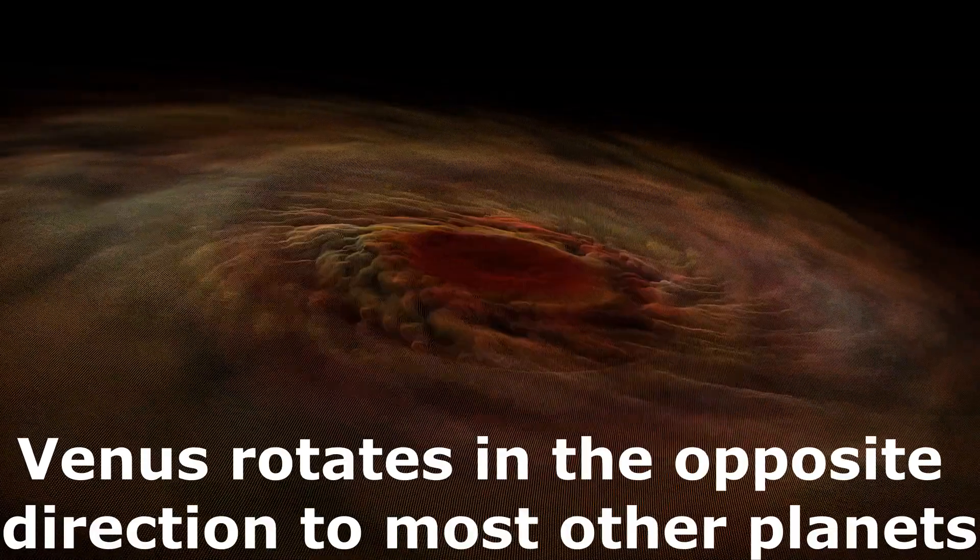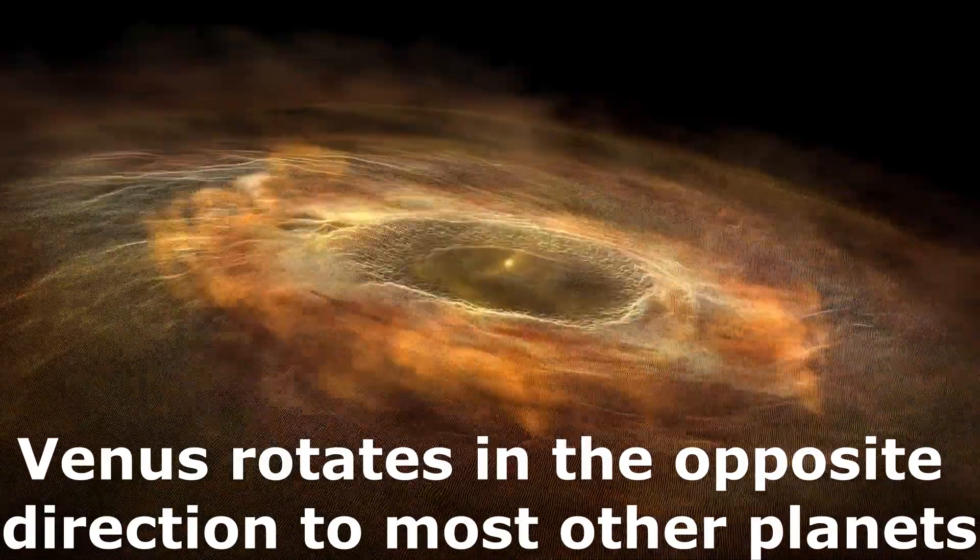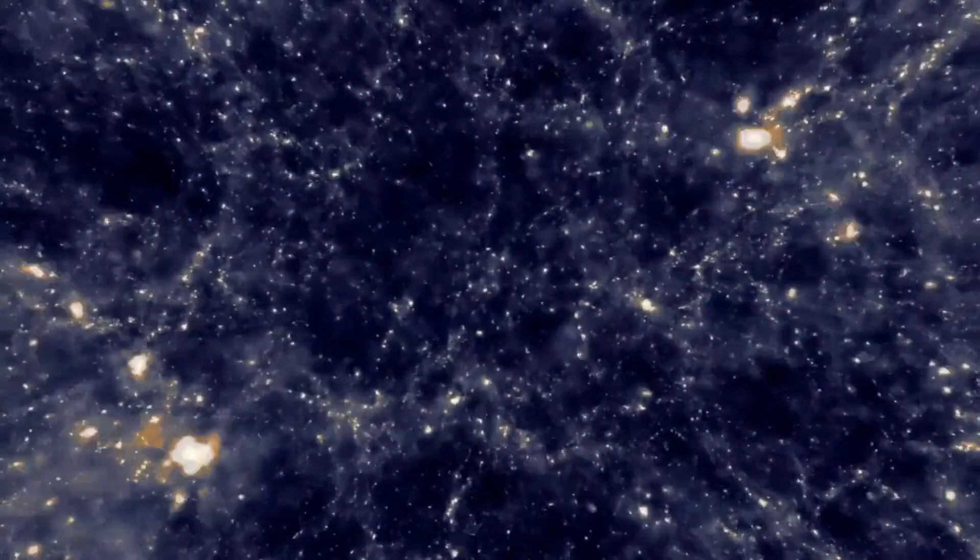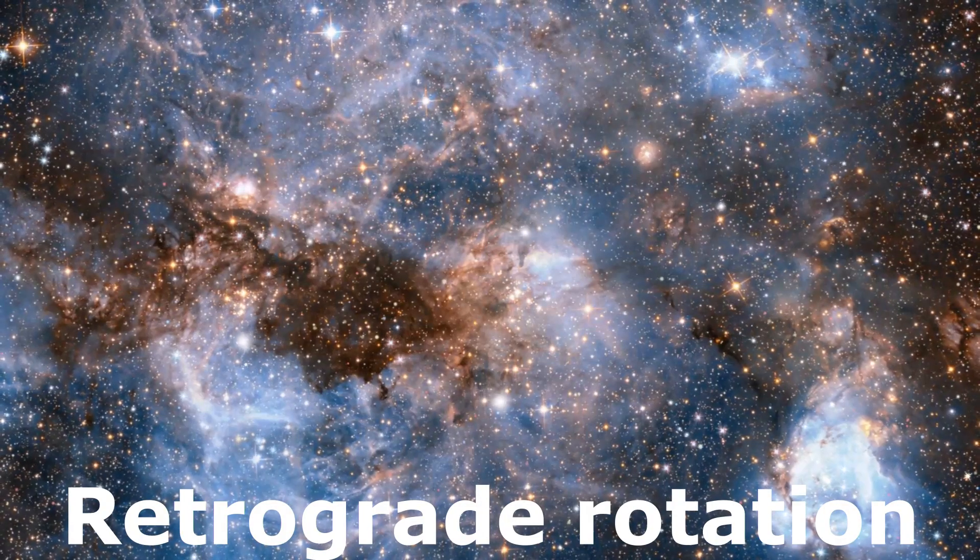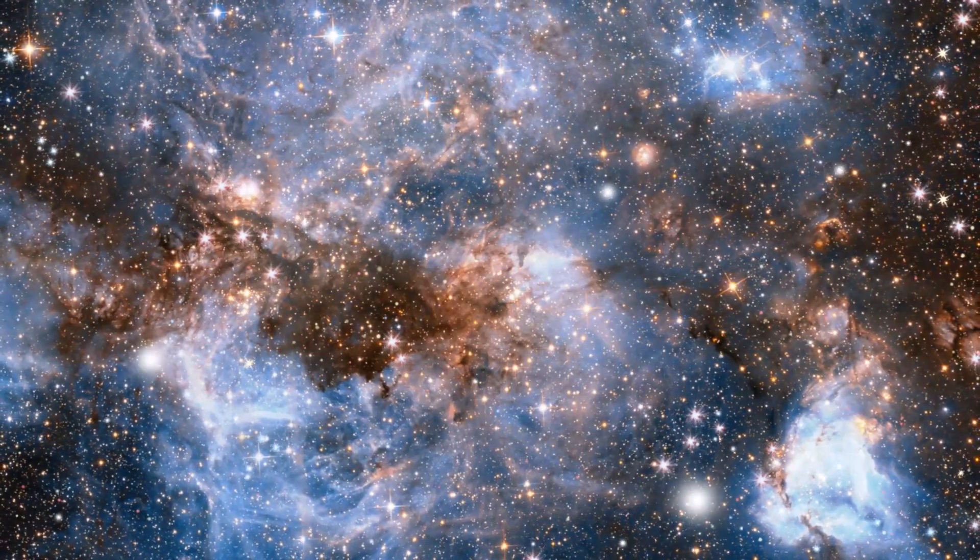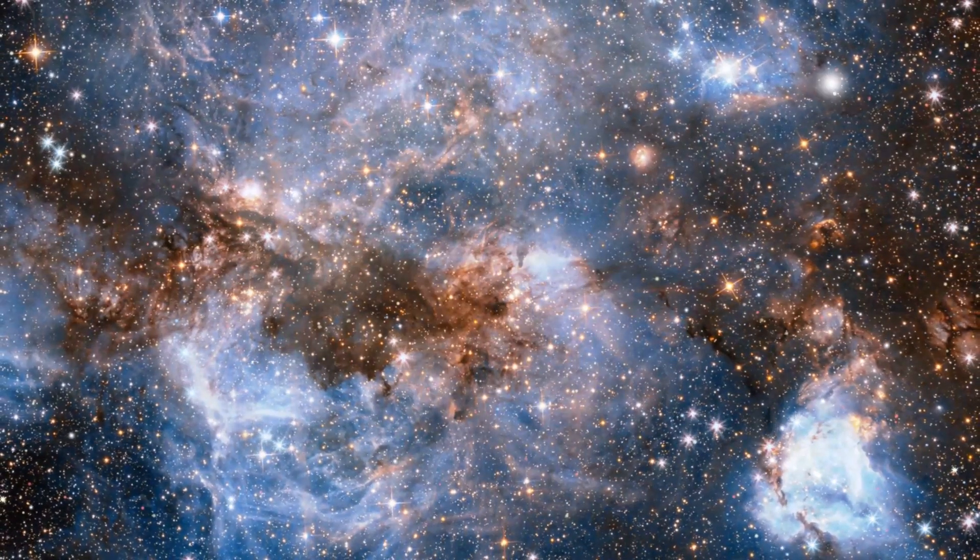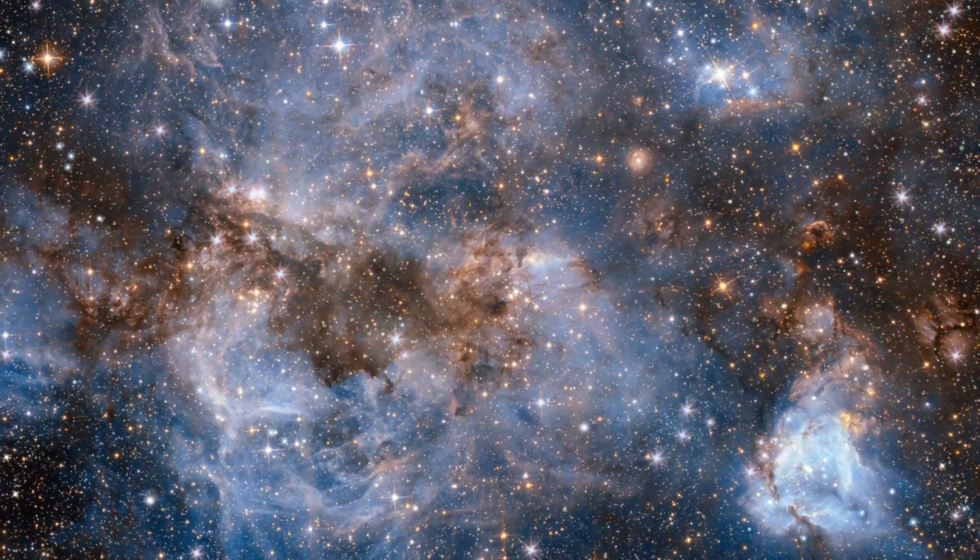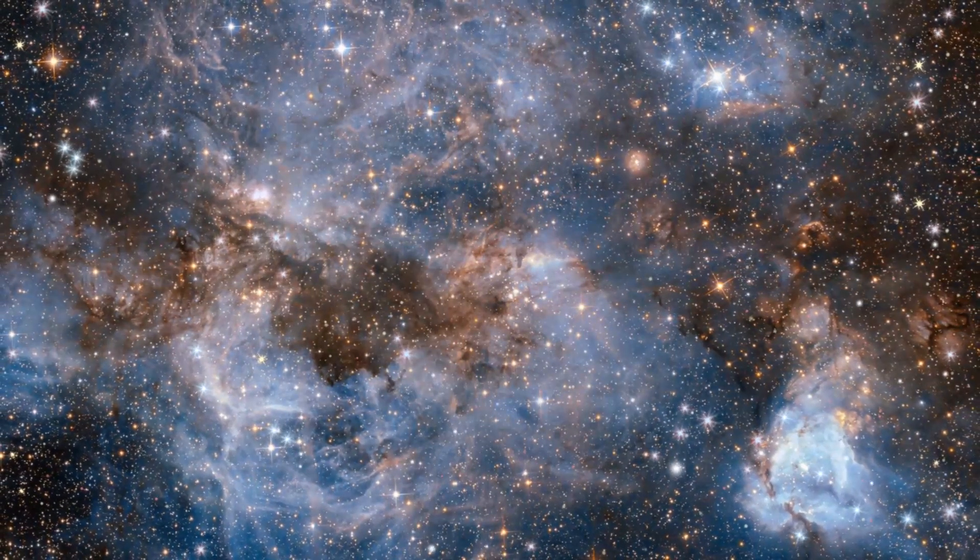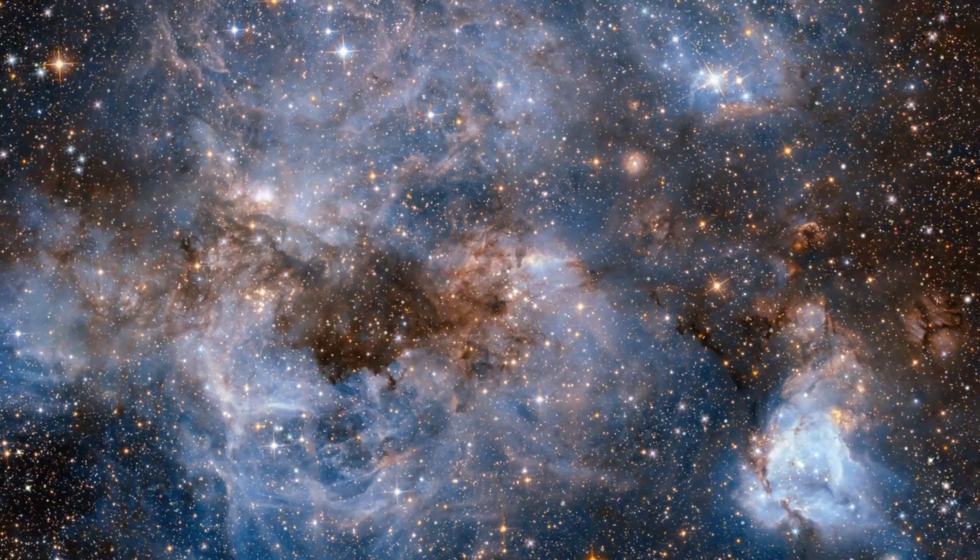Venus rotates in the opposite direction to most other planets. Venus is rotating in the opposite direction to the Sun. This is known as retrograde rotation. This rotation in opposite direction was caused due to a collision with an asteroid in the past. Venus is so bright that it can be seen during daytime on a clear day.